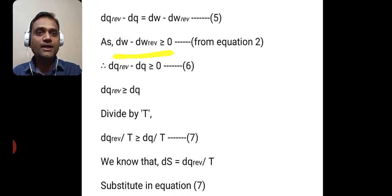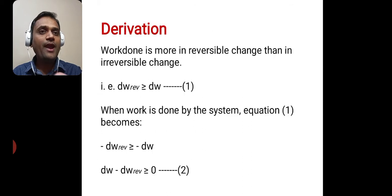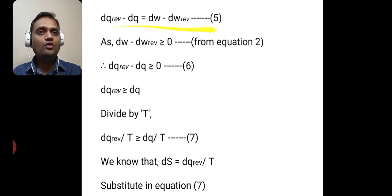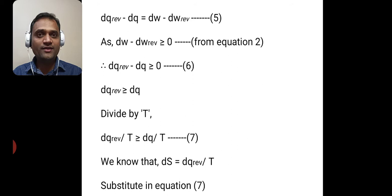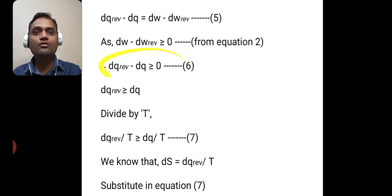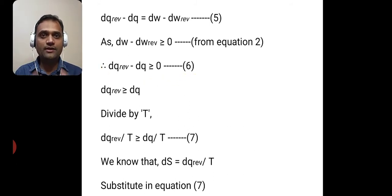Since dw minus dw reversible is greater than or equal to 0 — that is equation 2 — we can write from equation 5 that dq reversible minus dq is also greater than or equal to 0. This is because dq reversible minus dq equals dw minus dw reversible, and since dw minus dw reversible is greater than or equal to 0, therefore dq reversible minus dq is also greater than or equal to 0. This is equation 6.